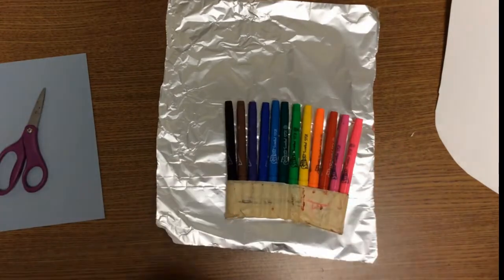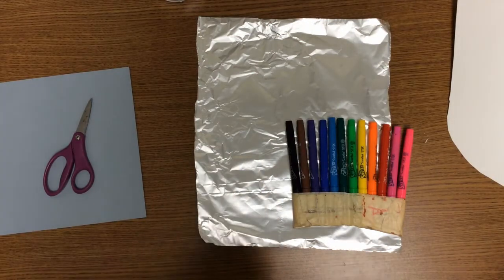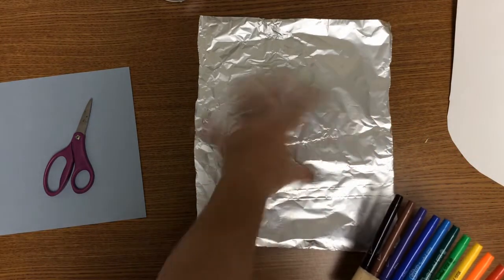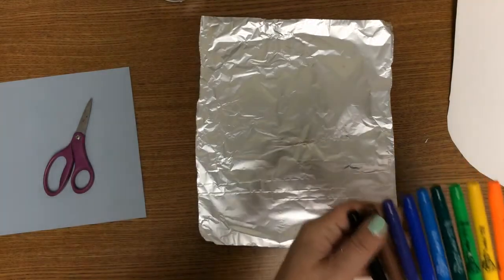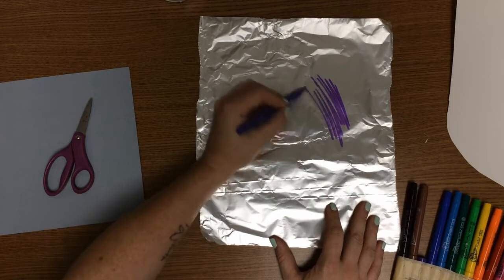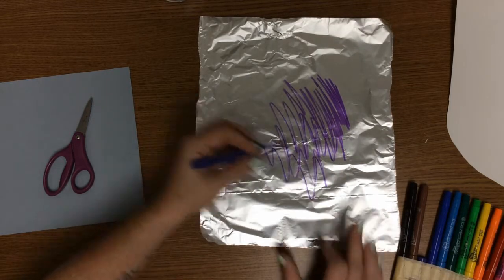What you'll need for this part is aluminum foil and your markers. We're going to be doing a marker print. What I want you to do is use your markers to color anywhere and all over on your aluminum foil.